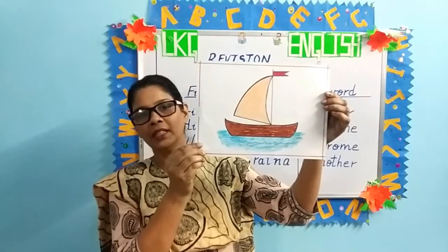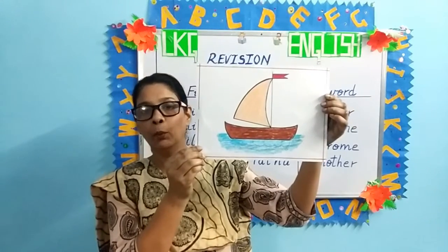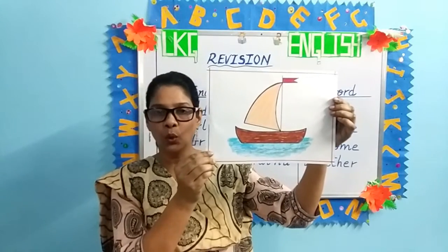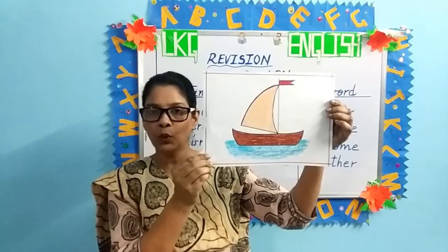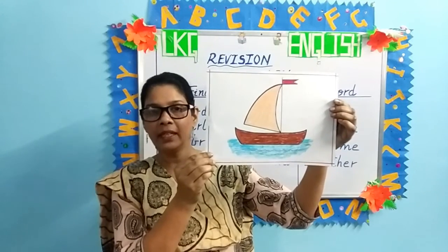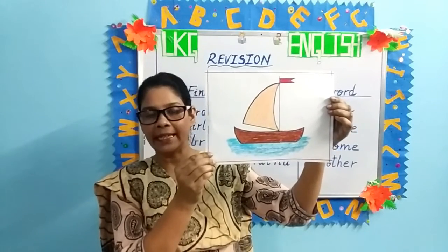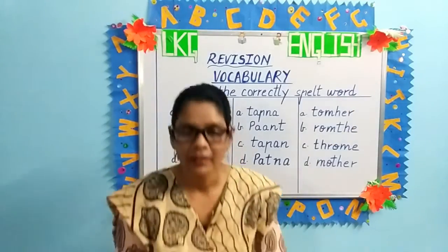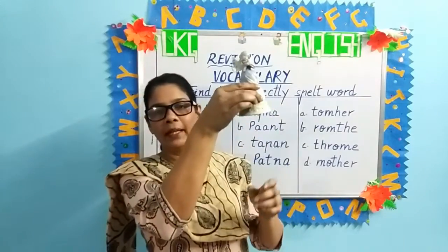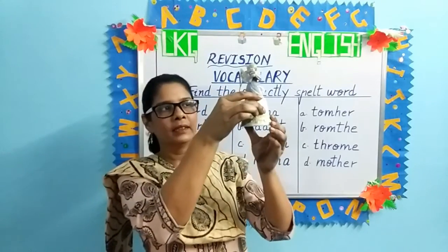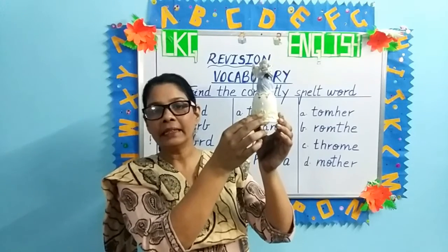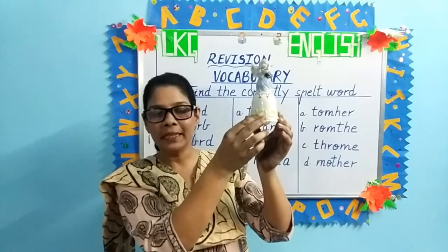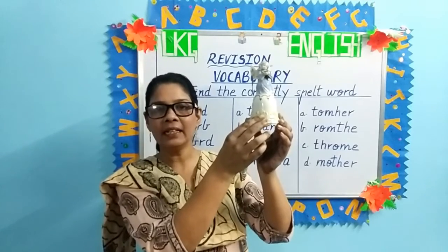What is this picture, children? It's a boat. What is the spelling of boat? B-O-A-T, boat. Again, B-O-A-T, boat. The next word is a bell. This is a bell. Spell bell. B-E-L-L, bell. Again, B-E-L-L, bell.